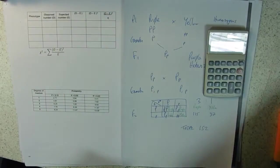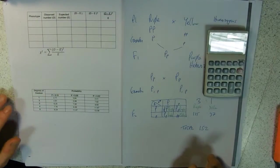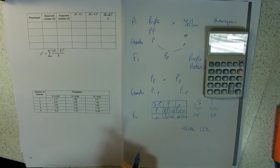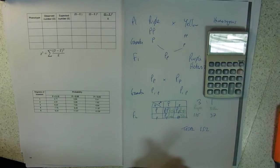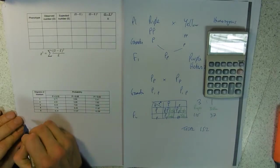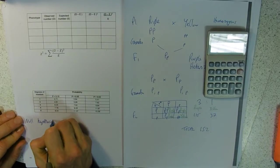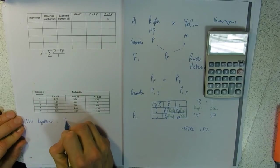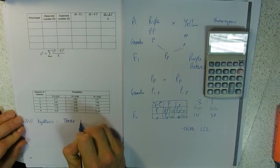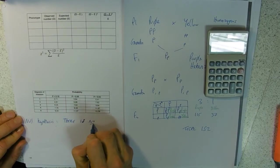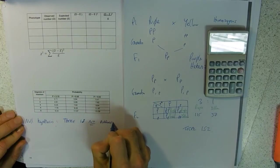We're going to do a chi-squared. This is the table you get in your lab book. We need a chi-squared test. Our null hypothesis is: there is no difference